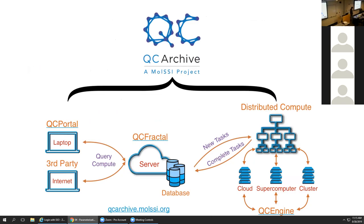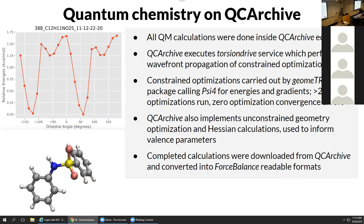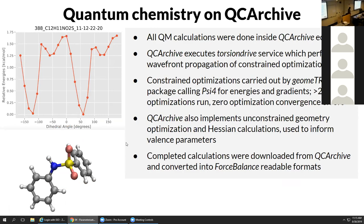I'll briefly plug the QCArchive project that Daniel will go into more detail on. This is a quantum chemistry computation environment that organizes all of your calculations and figures out where the cloud resources are to run them. It's really great for organizing large data sets needed for fitting force field parameters. QCArchive executes a method called torsion drive, which does recursive wavefront propagation of constrained energy optimizations.